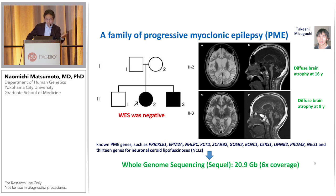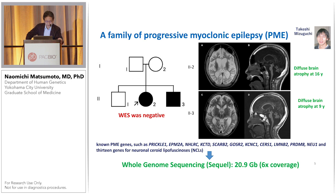So, how do we use these sequencing systems? Here is one example: a family with progressive myoclonic epilepsy, with two affected siblings. We performed whole exome sequencing, but it was totally negative. There was a candidate gene, but we still couldn't find any SNV or CNV.